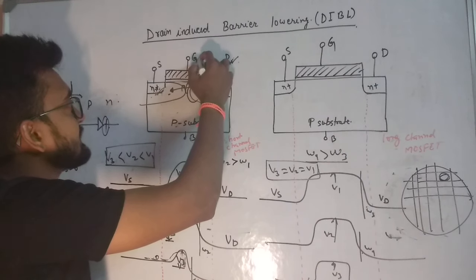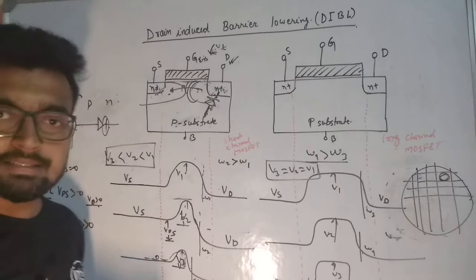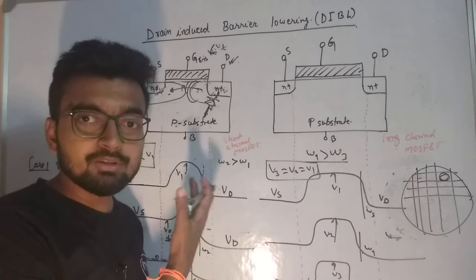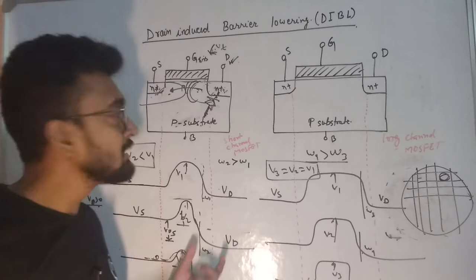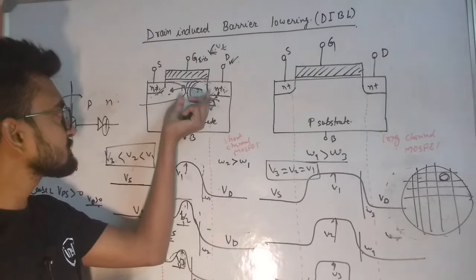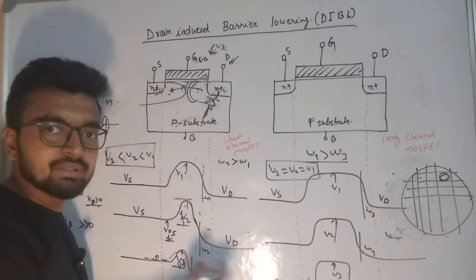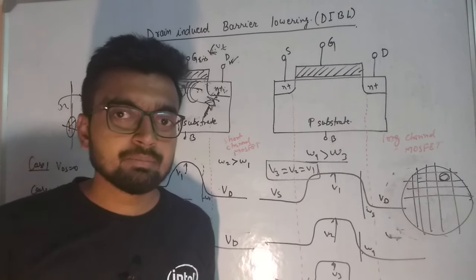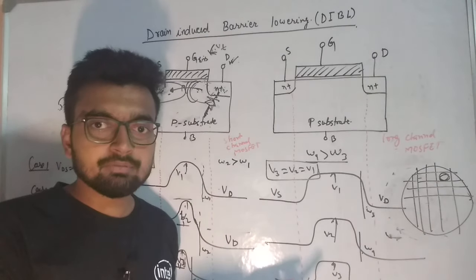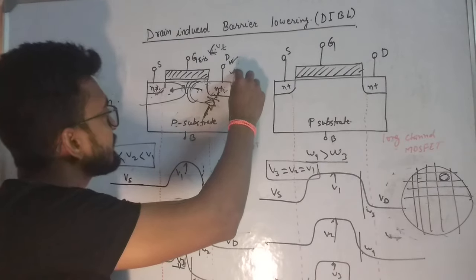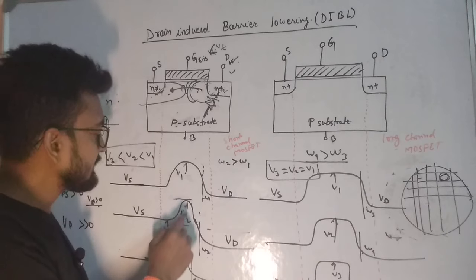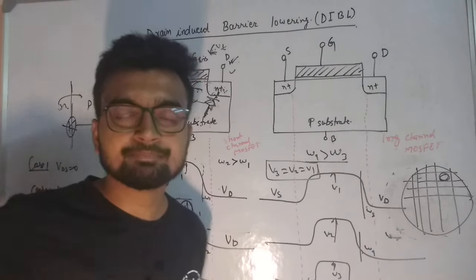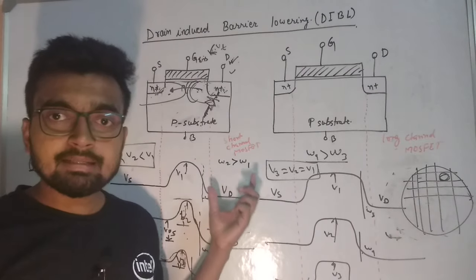This leakage current happens to occur even though VGS is less than Vt. Normally, when VGS is less than Vt the device should be turned off, but due to this short channel effect the device turns on even though VGS is less than Vt. This is known as punch-through - basically the stretching of the depletion region from drain to source. Due to this leakage current, static power dissipation in the device increases. The loading of the barrier is due to the drain - as we increase the drain voltage there is loading of the potential barrier, that is why we say Drain Induced Barrier Lowering. This happens only in short channel devices, and the gate no longer has control over the drain current.